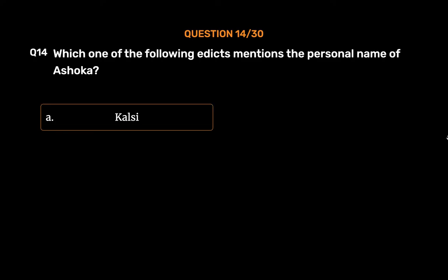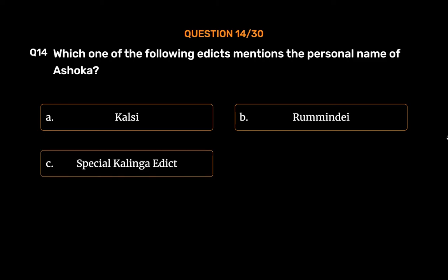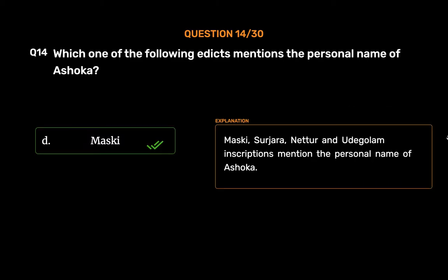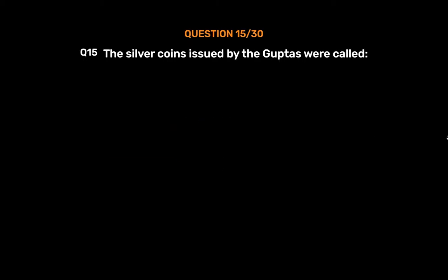Question number fourteen: Which one of the following edicts mentions the personal name of Ashoka? Option A: Kharosthi edict, Option B: Rummindei edict, Option C: Special Kalinga edict, Option D: Maski edict. The correct answer is Option D, Maski. The Maski, Gujarra, Nittur, and Udegolam inscriptions mention the personal name of Ashoka.